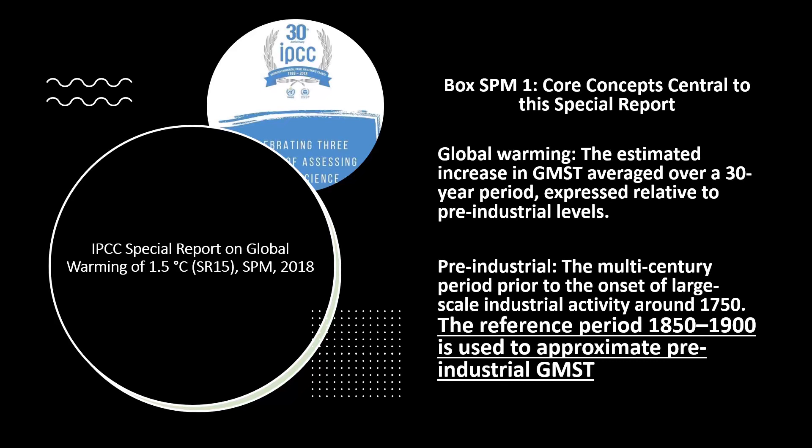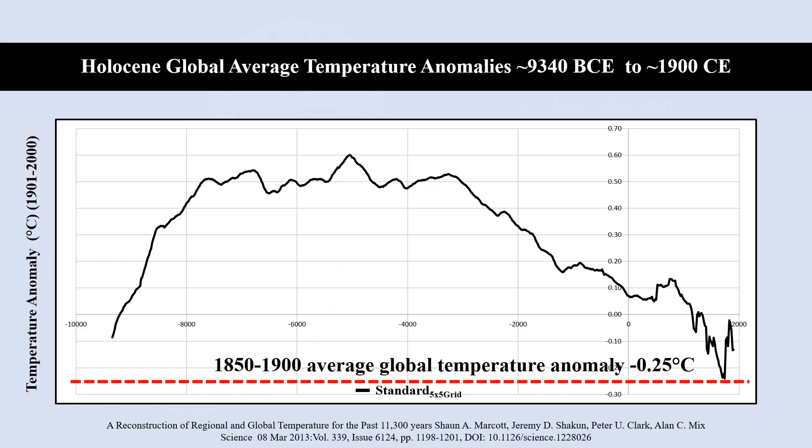The reference period 1850 to 1900 is used to approximate pre-industrial global mean surface temperature (GMST). The period 1850 to 1900 is thus the reference period, or start point, from which global warming is measured.